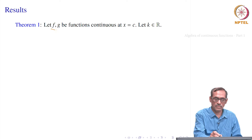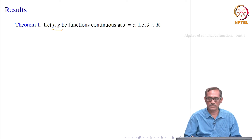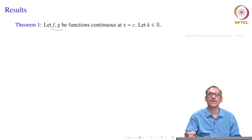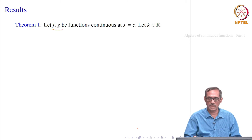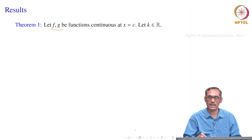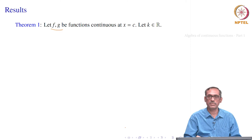Suppose we have two functions f and g defined on some subset of ℝ — we will take some intervals here to make it simpler. For continuity at x equal to c, using the epsilon-delta definition: for each epsilon greater than 0, we should be able to find one delta greater than 0 such that whenever x is in the domain intersected with the neighborhood (c minus delta, c plus delta), the difference |f(x) − f(c)| is less than epsilon.